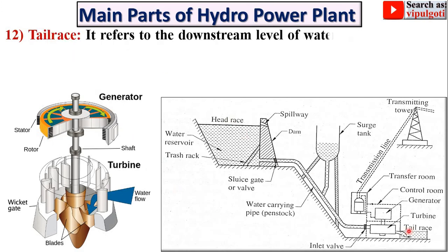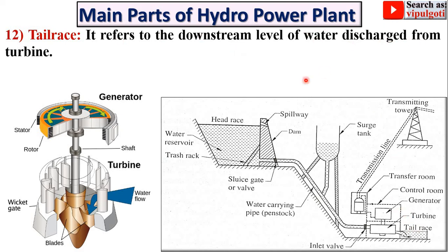Next: tailrace. Here you can see the tailrace level. It refers to the downstream level of water discharged from the turbine. This is the upstream level and this is the downstream level of the river. So tailrace refers to the downstream level of the water.